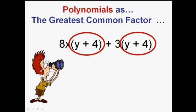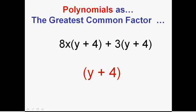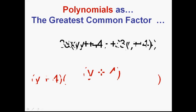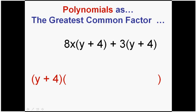You see you have two terms but they both contain the parentheses or polynomial y plus 4. So we can do the exact same thing. What did we do? We use that as the greatest common factor. Now when you have a greatest common factor you put it outside of parentheses just like before.